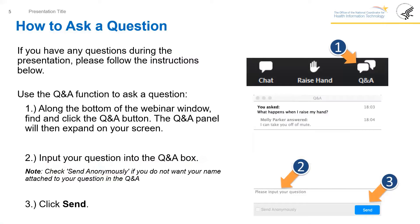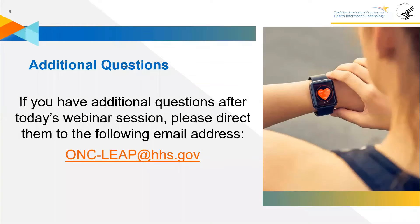How to ask a question: if you have questions during the presentation, use the Q&A function. Along the bottom of the webinar window, find and click the Q&A button. The Q&A panel will expand on your screen. Input your question into the Q&A box, then click send. If you do not want anyone to know who is asking, you have an anonymous button — click it and your name will not be attached to your question. If you have additional questions after today's webinar, please direct them to ONC-LEAP@HHS.gov.